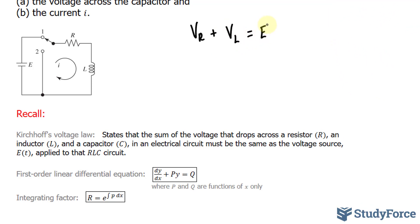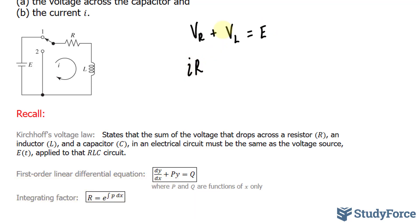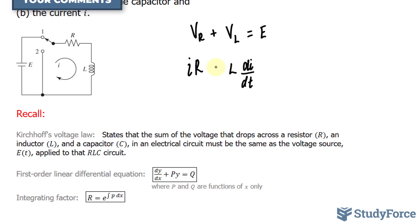The formula that relates voltage and resistance is V equals IR. So instead of V subscript R, I'll replace this with I for current times R. And the formula that relates voltage across an inductor is L for inductance times the rate of change for the current with respect to time, so dI over dt is equal to E.